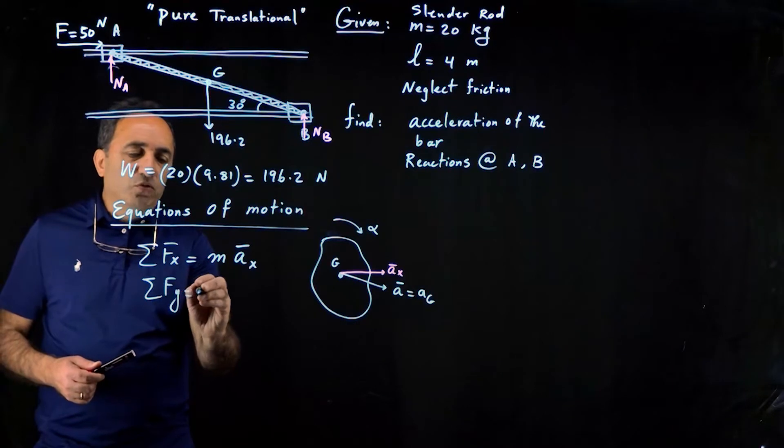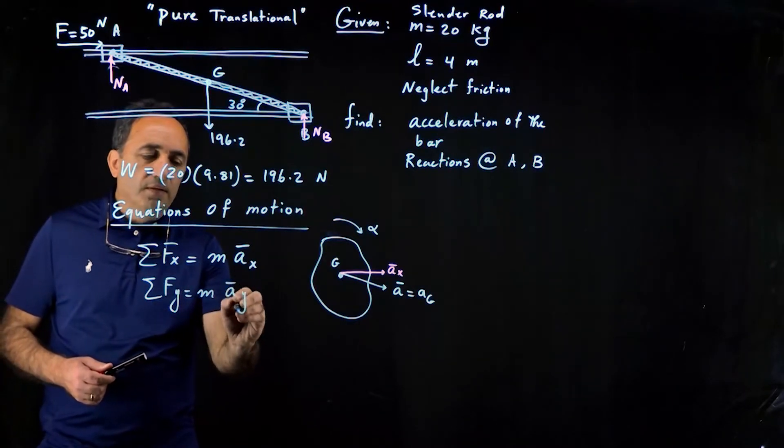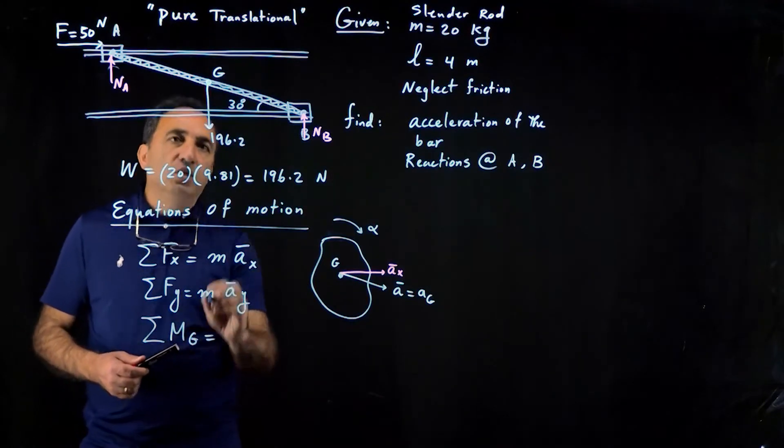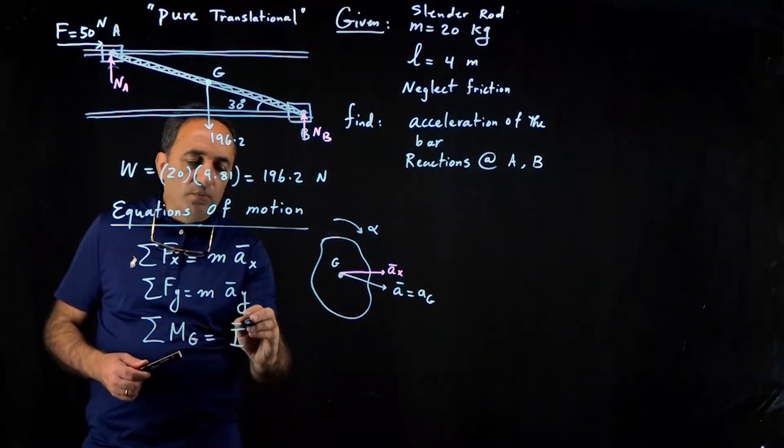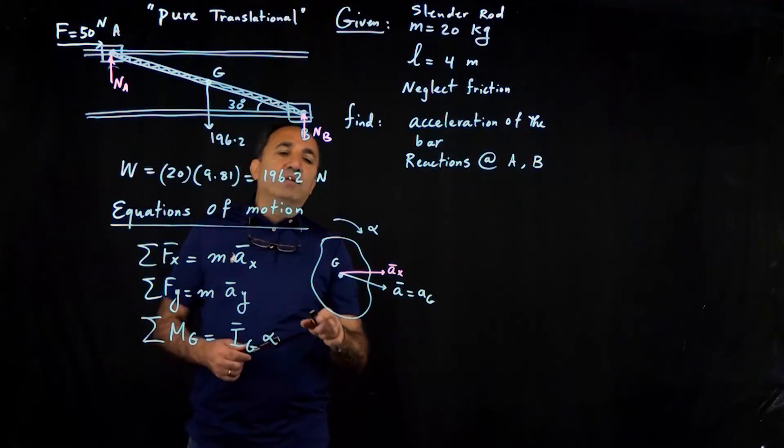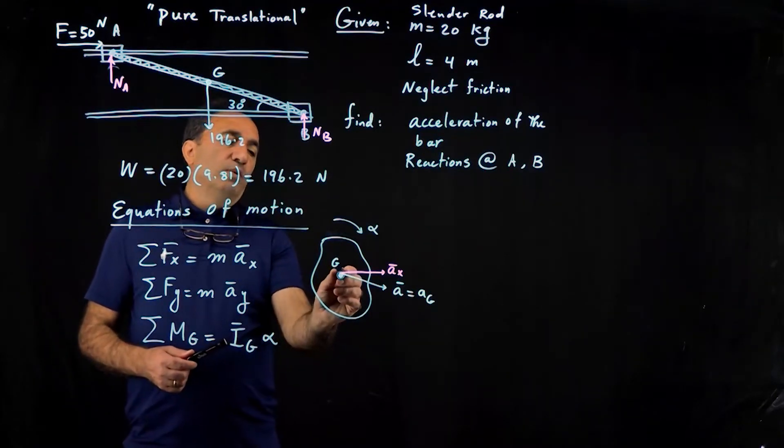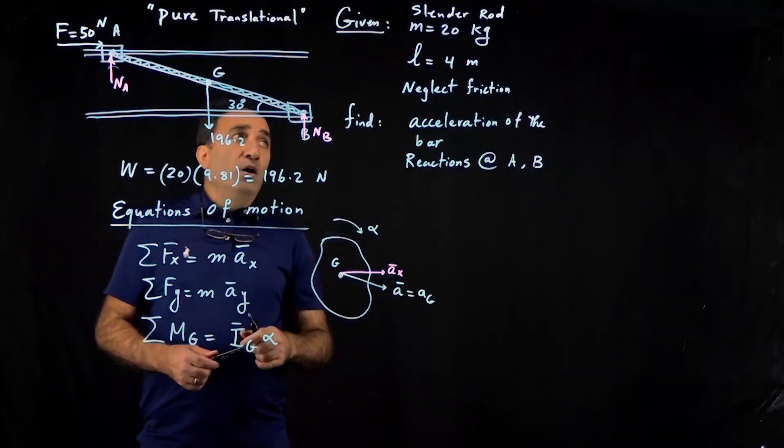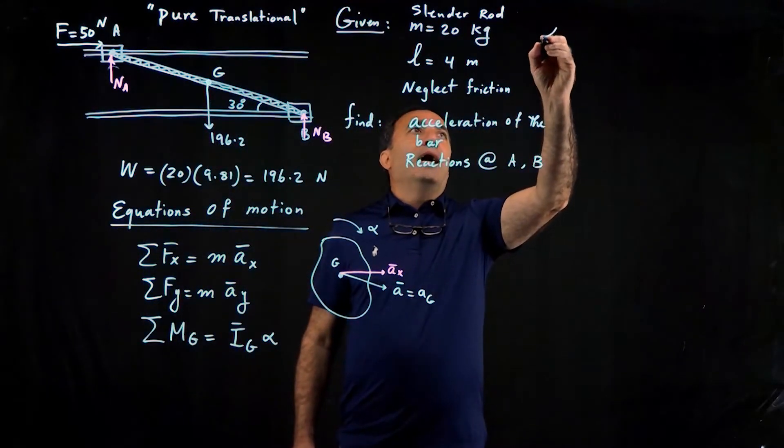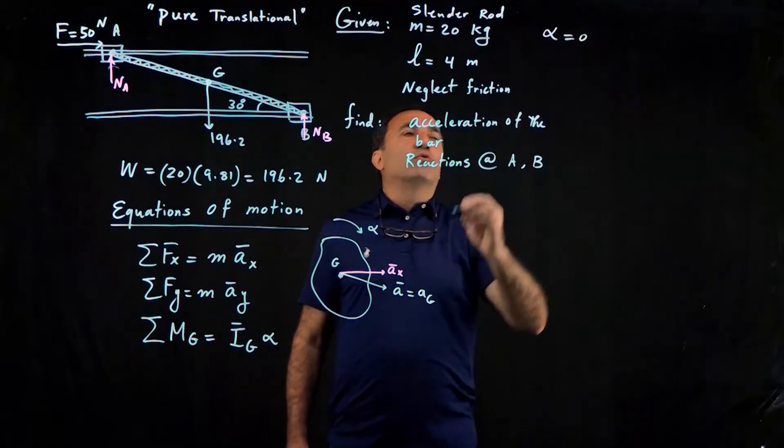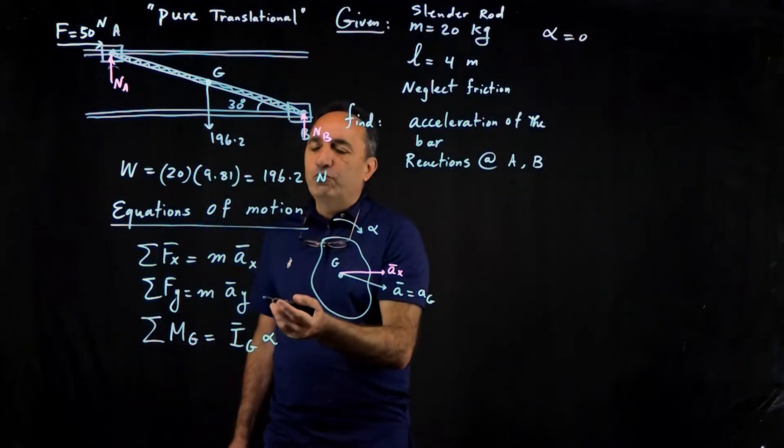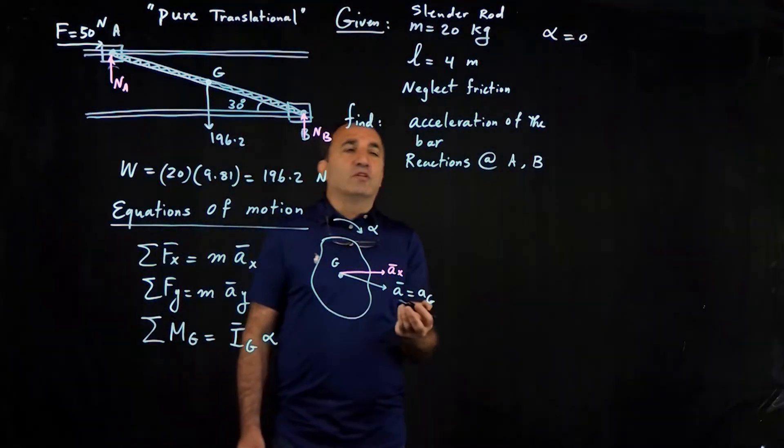So here a-bar x would be the x-component of acceleration of that center of gravity. And then in the y-direction, same story. And then of course, the important equation is that if you take moment about g, which is the center of gravity, that's equal to i-bar g or just i-bar times alpha. So bar here basically means the mass moment of inertia with respect to the axis that passes through g. Of course, in this problem, since this is a pure translational problem, alpha is zero. There's no rotation involved. Therefore, the right-hand side of this equation for us is going to be zero.